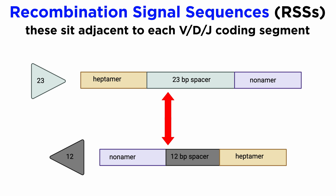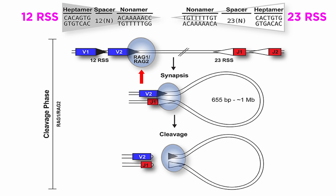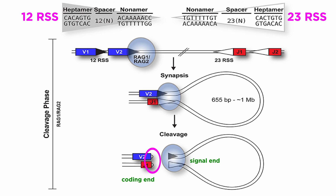In vivo, recombination takes place between one RSS with a 12-base-pair spacer and one with a 23-base-pair spacer — the so-called 12-23 rule. The cleavage phase begins with RAG1 and RAG2, enzymes which work as a multi-subunit complex to induce cleavage of double-stranded DNA. These enzymes bind to either a 12-RSS or 23-RSS, and this complex then synapses with a partner RSS of the complementary spacer length. The RAG complex then nicks one DNA strand of each RSS and catalyzes trans-esterification reactions to generate hairpinned coding ends and blunt signal ends.